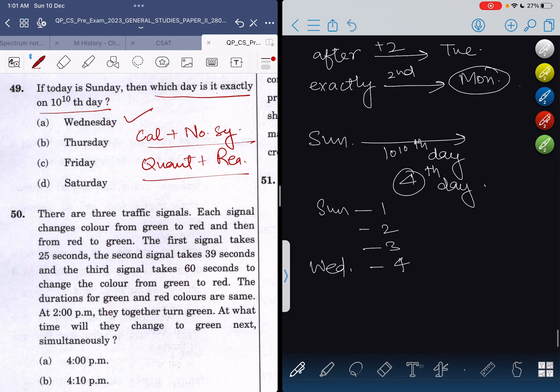So Wednesday is the right answer. Get your confusions cleared—Wednesday is correct. On the internet, many people say Thursday is right, but it's not. UPSC played a trick here, which is why it's a question of reasoning as well as quant.